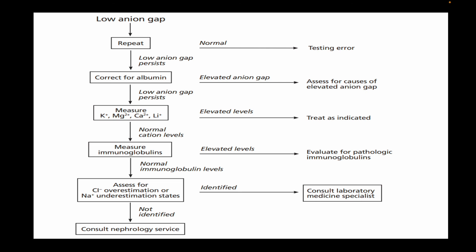If a low albumin persists, correct for albumin. If after correcting for albumin you get a high anion gap, assess for the underlying cause of metabolic acidosis. If it remains low after albumin correction, check unmeasured cations — including lithium in the appropriate clinical context. If cations are normal, look for elevated immunoglobulin levels. If immunoglobulins are also normal, consider chloride overestimation or sodium underestimation, notify the lab accordingly, and if none of these are found, seek a nephrology opinion.